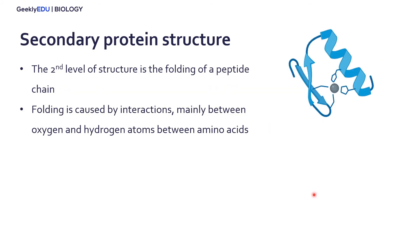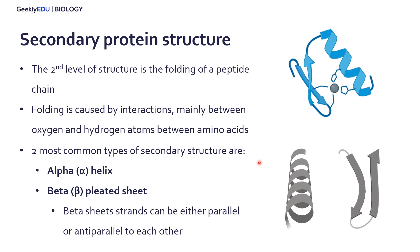The second form of protein structure is secondary structure. This refers to the folding of our polypeptide chain, and this folding is caused by interactions in the amino acids, mainly between the oxygen and hydrogen atoms within our amino acid molecules. There are two types of secondary structure within our proteins. The first is an alpha helix, which looks like a helix structure. Then we have the beta pleated sheet, which has more of a linear structure. These sheets can be folded so that they're running parallel or anti-parallel, in opposite directions. It's important to note that within a single protein, we can have multiple types of secondary structure.